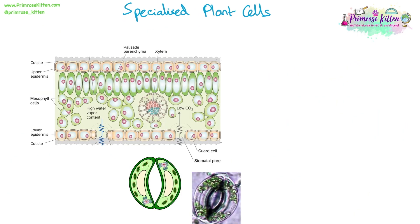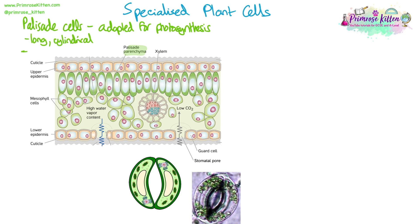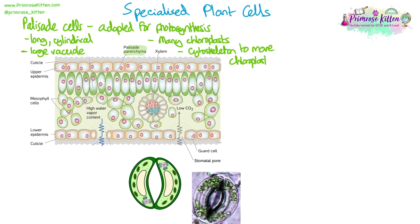We also need to know some examples of specialised plant cells. First, we have palisade cells, which are adapted to carry out photosynthesis. They are long and cylindrical, allowing them to pack closely together in a layer of tissue in the leaf. They have a large vacuole, which helps to push chloroplasts to the edge of the cell. They have many chloroplasts to absorb light energy for photosynthesis, and they have a cytoskeleton that allows them to move those chloroplasts around to increase the amount of light they can absorb.